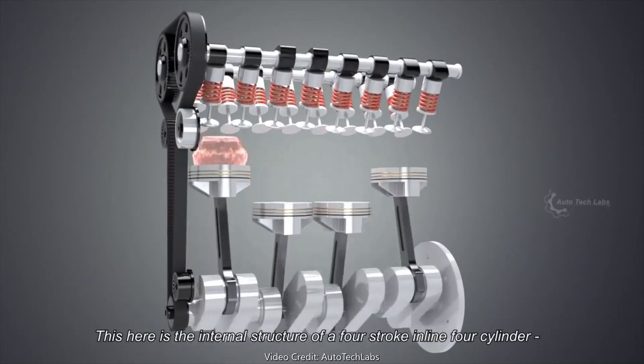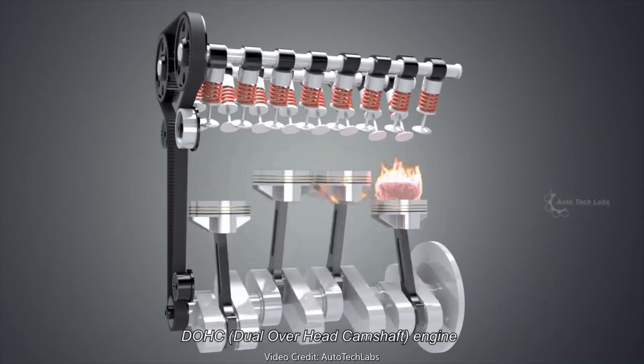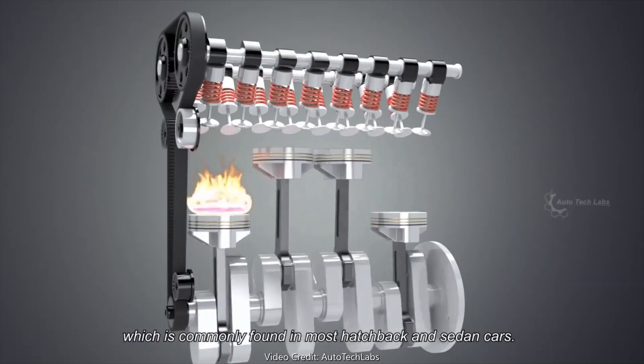This here is the internal structure of a 4-stroke inline 4-cylinder DOHC engine, which is commonly found in most hatchback and sedan cars.